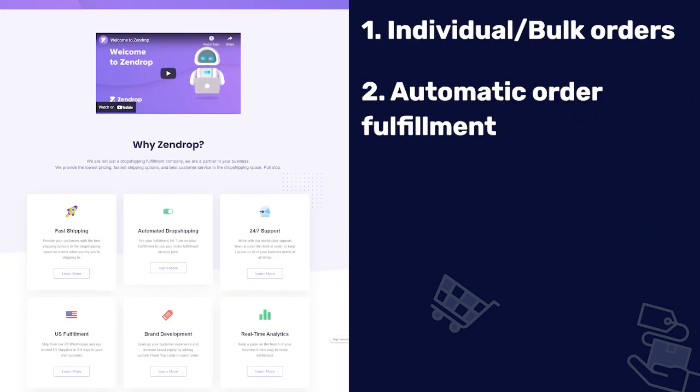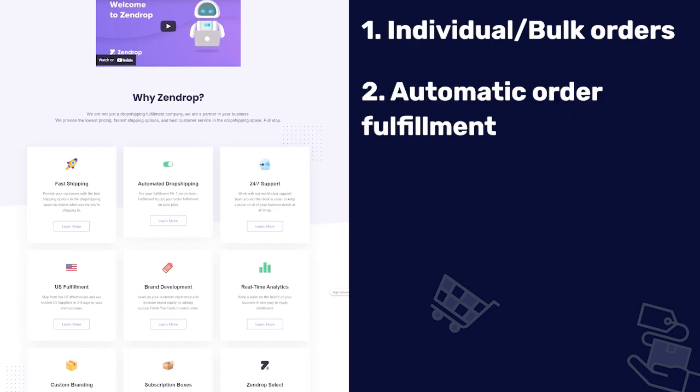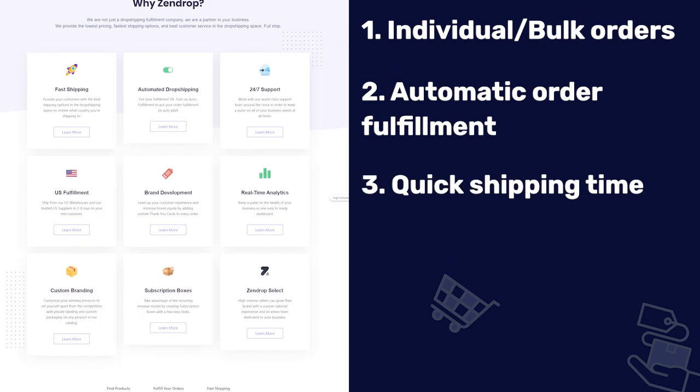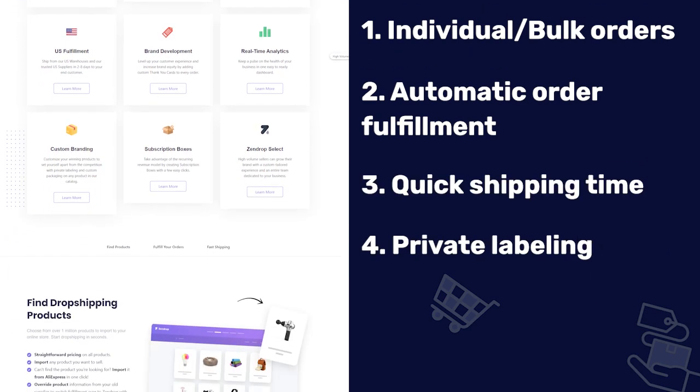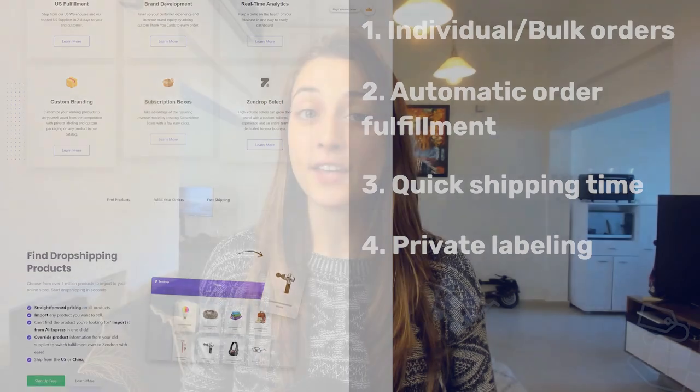Finally, last on our list is Zendrop. Zendrop has awesome features like individual and bulk orders, automatic order fulfillment, quick shipping times, and private labeling. Similar to Dropified and Printful, Zendrop also allows you to privately label your own branded products — just choose a winning product from their catalog, fill in a few details about your branding, and have it shipped to customers.